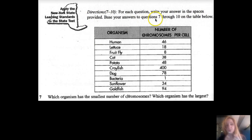For each question, write your answer in the space provided. Base your answers on questions 7 through 10 on the table below: organisms—human, lettuce, fruit fly, cat, potato, crayfish, dog, bacteria, sunflower, goldfish—and number of chromosomes per cell. Instead of me reading them all, I'll look for: are they increasing or decreasing? Nope, there's no relationship, so it's not that type of chart. It's just showing how many chromosomes per cell. I see the crayfish have the highest rate, bacteria have the lowest, and I can't determine any other relationship between them.